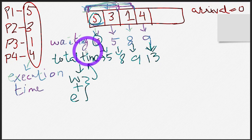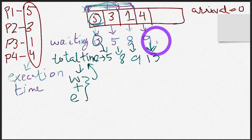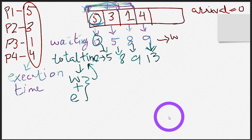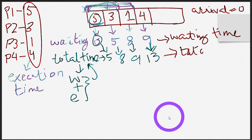These are some terminologies and timings you should know. We calculated the waiting time and the total time. Waiting time is the total amount of time that you have to wait for all the processes before you. Total time equals waiting time plus execution time.